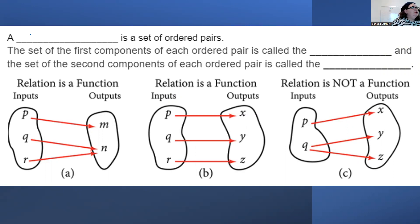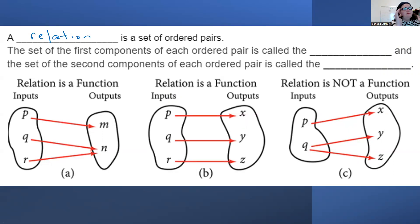A relation is a set of ordered pairs. We have an x and y in parentheses with a comma — that's an ordered pair. A relation is a set of ordered pairs, so it's not just one; it's multiple groups. The set of the first component of each ordered pair, which is where x is located, is called the domain.